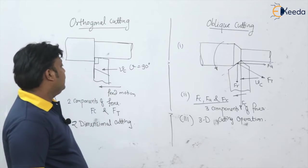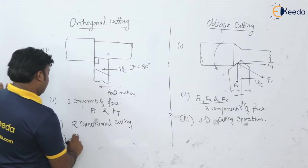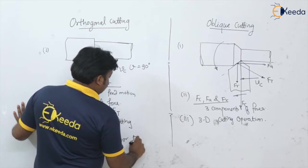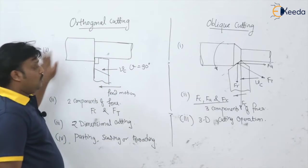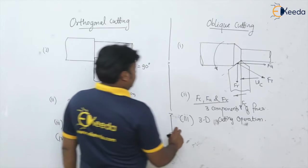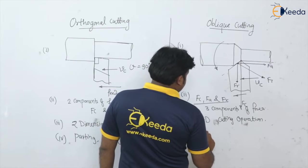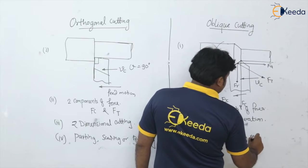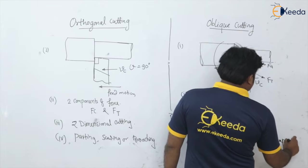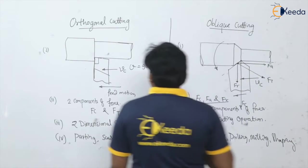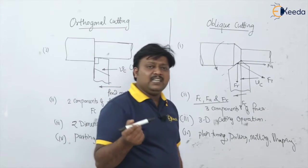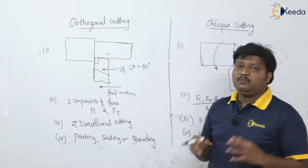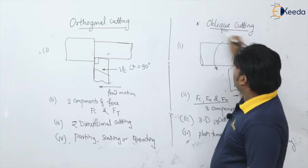Examples of orthogonal cutting include parting operation, sawing operation, and broaching operation. Examples of oblique cutting operations include plane turning operation, drilling operation, milling operation, and shaping operation. Orthogonal cutting can be taken as the ideal cutting; however, many practical cutting processes are oblique cutting processes.